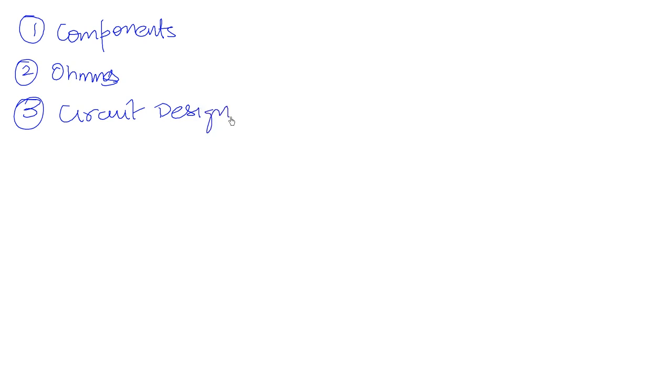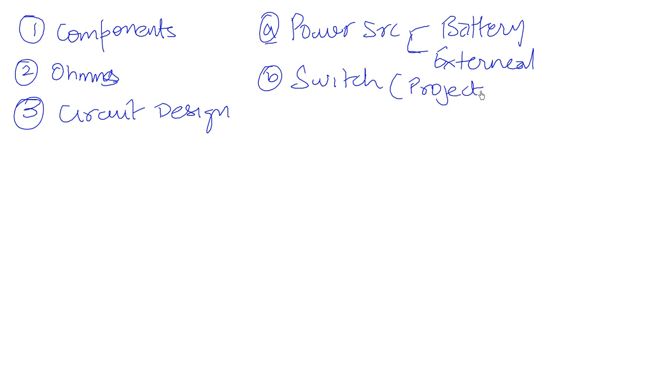So the components we are looking at are power source, which in our case can be either a battery or an external source of some kind. A second component is a switch. The one we are going to look at is called a projected switch, which has an easy access button on it.